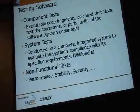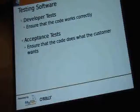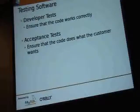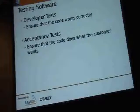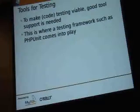Testing software generally falls into a few categories: component tests, system tests, and non-functional tests. There's also a different way of looking at it — developer tests that ensure the code works correctly, which developers should write (and modern software development processes like Extreme Programming demand this), and acceptance tests that ensure the code does what the customer wants. To make testing viable, good tool support is needed. This is where a testing framework such as PHPUnit comes into play.